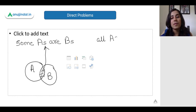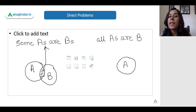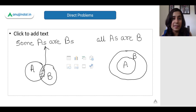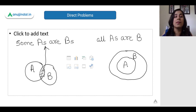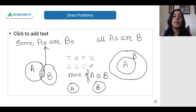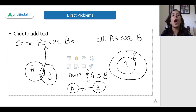The next statement type is 'all A's are B's.' Here I draw a circle for all A's, and since all A's are B's, B is a bigger circle encircling A — B takes all of A inside it. For 'none of A's is B,' there is absolutely no connection between A and B — they are separate circles with no intersection.